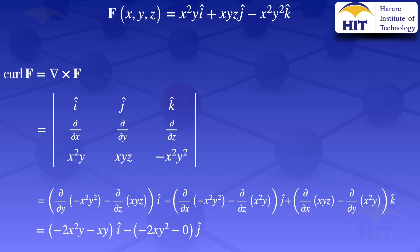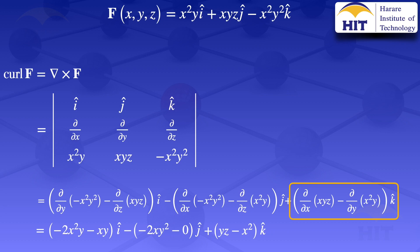For the k̂ component: the partial derivative with respect to x of xyz — treating y and z as constants — gives yz, since the partial derivative of x with respect to x is 1. Then the partial derivative with respect to y of x²y, treating x as a constant, gives x². So the k̂ component is (yz − x²)k̂.